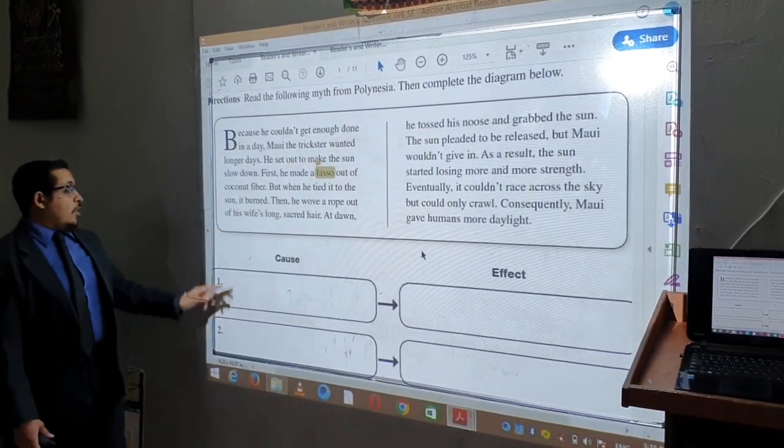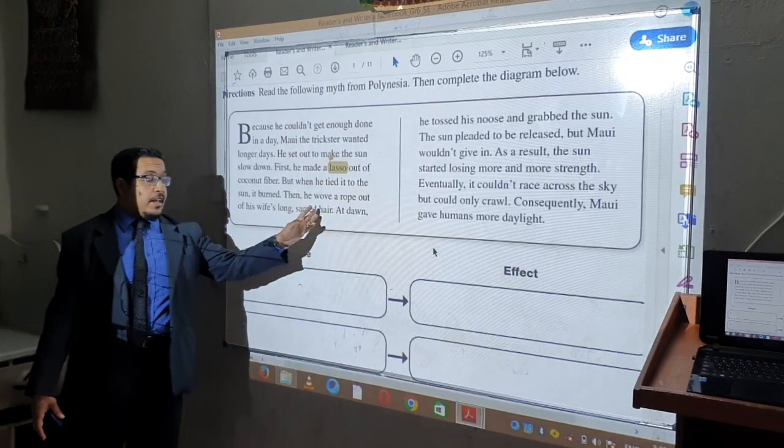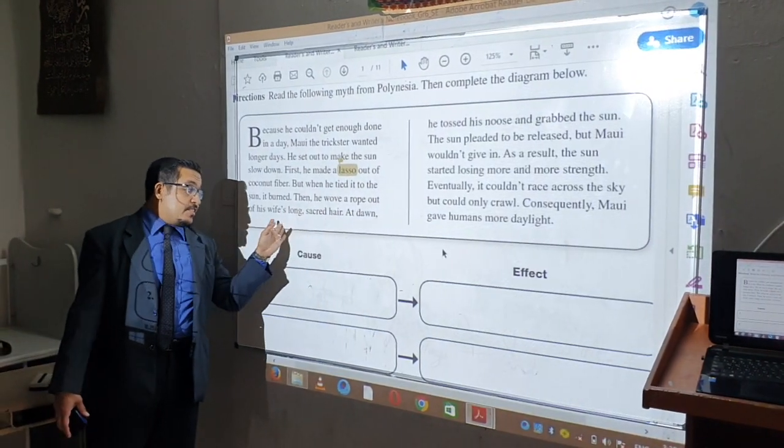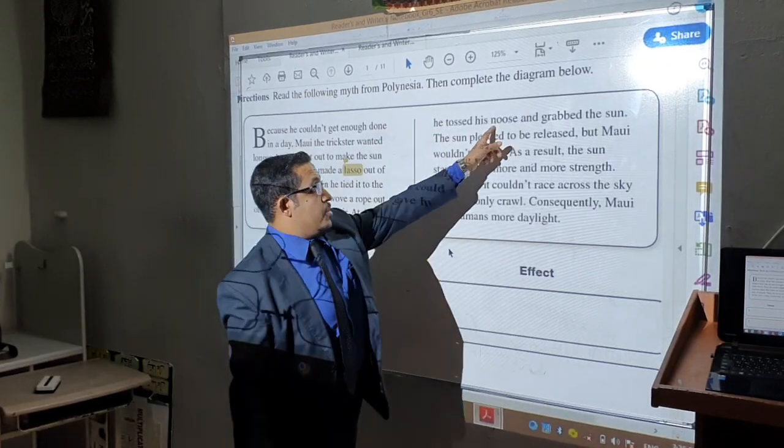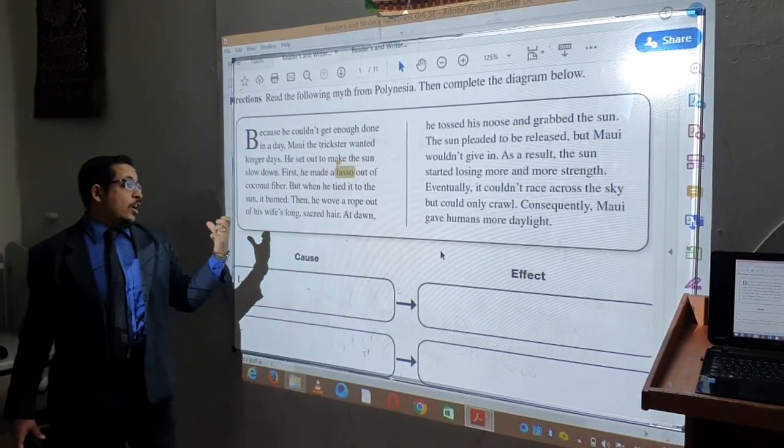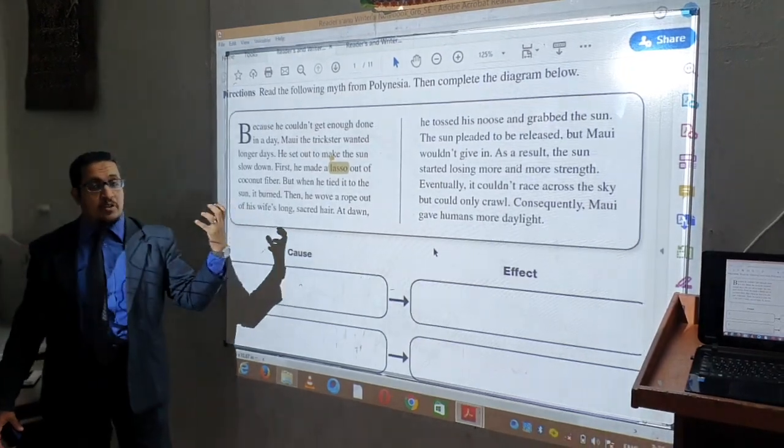Then he wove a rope out of his wife's long, sacred hair. As a result of the new rope, what happened? He snared the sun's nose and grabbed the sun. Why? Because this rope was very strong.